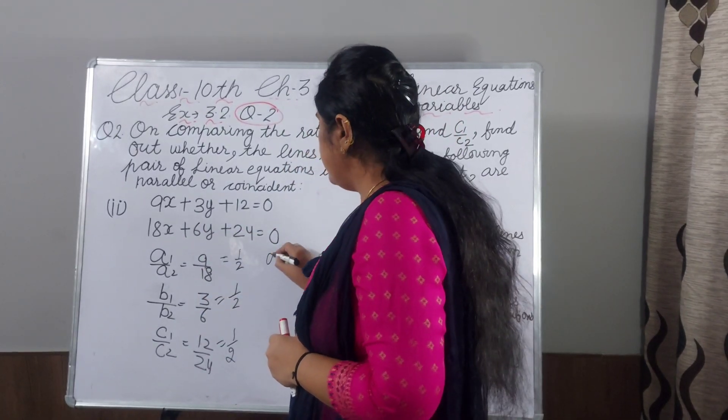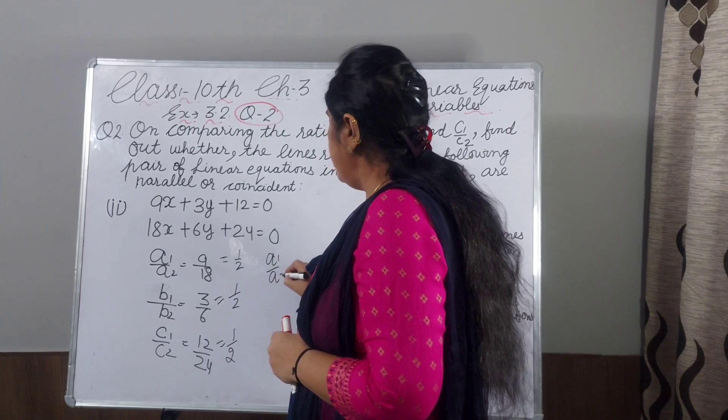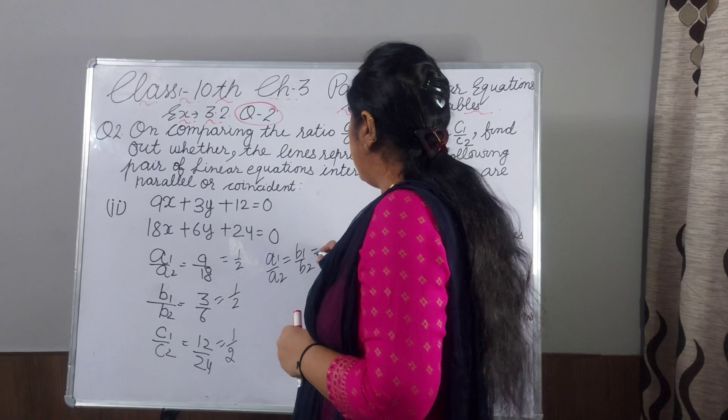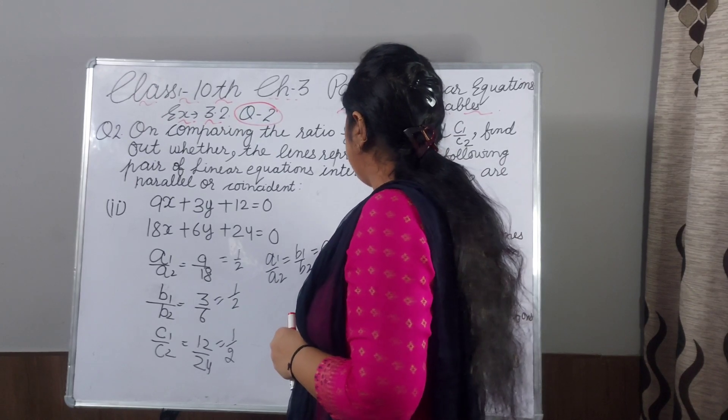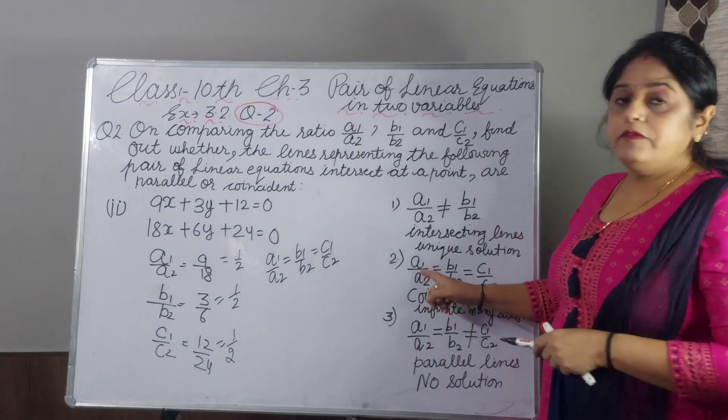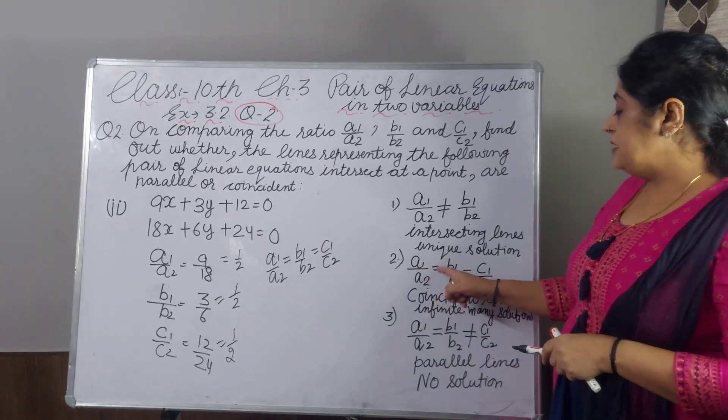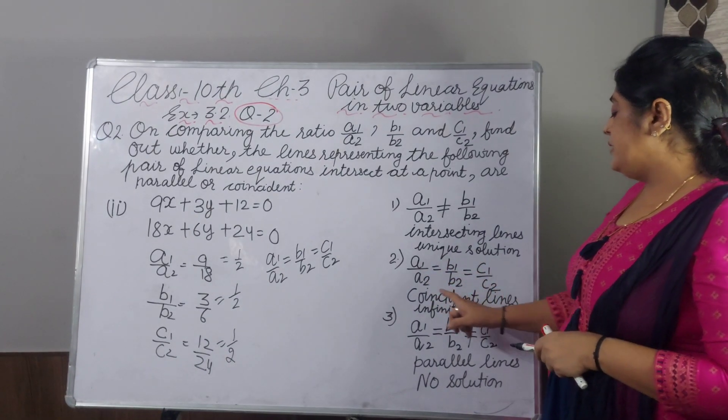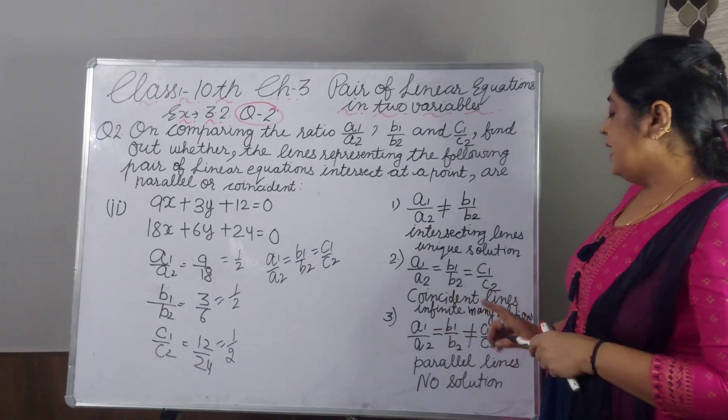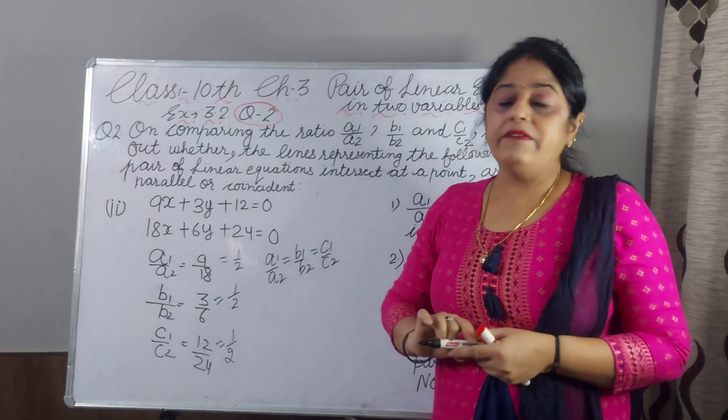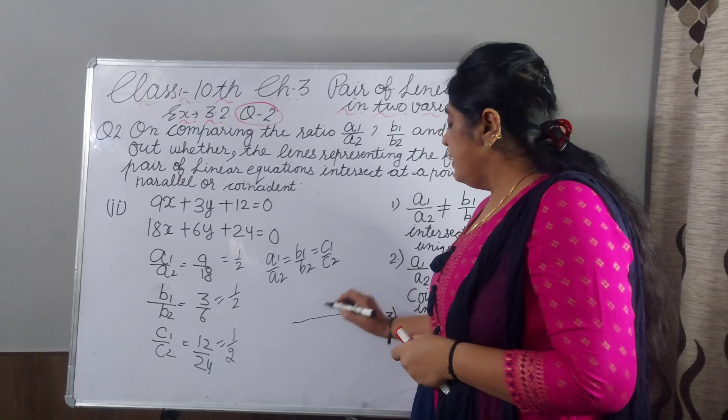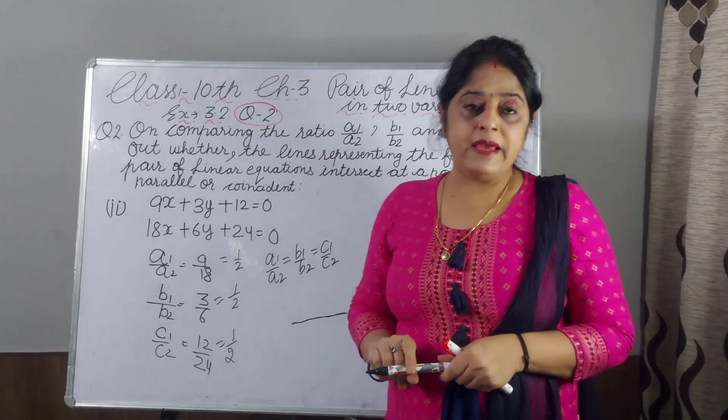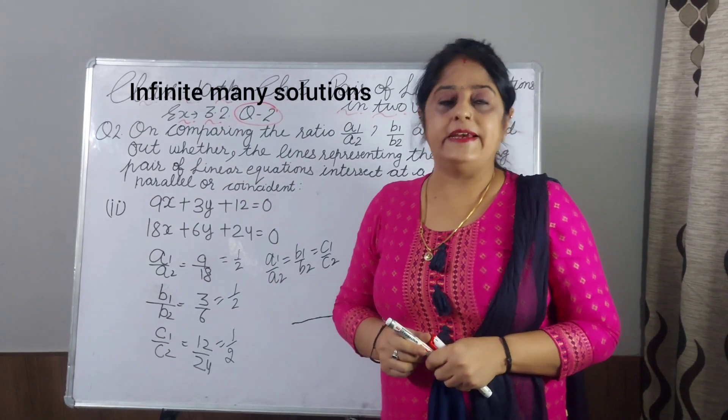And you compare this. What you are getting? A1 by A2 is equal to B1 by B2, and equal to C1 by C2. Here I have told you, if A1 by A2 is equal to B1 by B2 and equal to C1 by C2, there are coincident lines. Graphically they will cover each other. One line and another line will come on this line. And infinitely many solutions algebraically you will get.